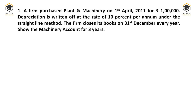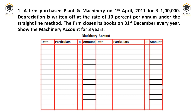In this case: SLM method, 10% depreciation, books closing on 31st December, but the asset was purchased on 1st April. So we calculate the number of months used. We need to prepare the machinery account. When machinery is purchased, the entry is: Machinery Account Dr. to Cash/Bank Account. So on 1/4/2011 we write 'To Cash Account' — Rs. 1 lakh.